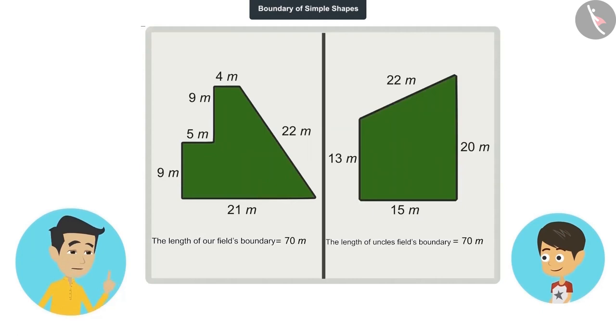Look, our farm has six edges. While your uncle's field has four edges. But the measurements of the boundaries of both fields is the same. Yes, I had not paid attention to this.